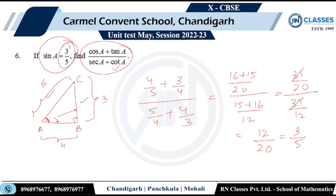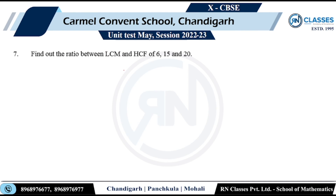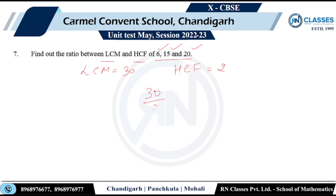Dividing: (31/20) ÷ (31/12) = 31/20 × 12/31 — the 31s cancel — giving 12/20 = 3/5, which is the answer. Moving on: find the ratio of LCM to HCF of 6, 15, and 20. The LCM is 60 and the HCF is 1... wait, HCF is actually 1, but the stated answer gives a ratio of 60:1. Actually LCM of 6, 15, 20 is 60; HCF is 1, ratio is 60:1.